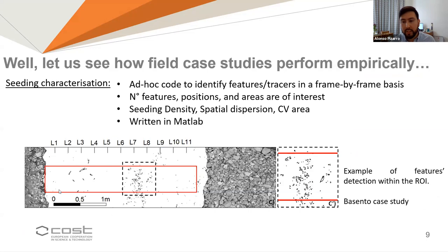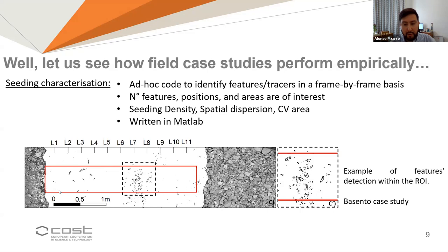This is a very important slide because it presents the quantification of the seeding metrics, carried out using an analysis code written in MATLAB. The code gives the possibility to identify the tracers, their positions, and their dimensions. The figure shows an example frame of the Basento River where seeding characterization was performed within the region of interest — the red square. I support open science and want to release the code in the near future. I am currently working on a clean and stable version and will probably release it in my next manuscript.